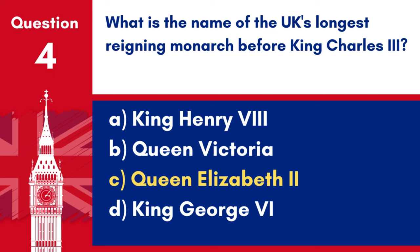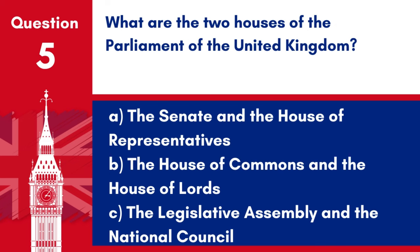Before King Charles III, Queen Elizabeth II was the UK's longest reigning monarch. Question 5. What are the two Houses of the Parliament of the United Kingdom? A. The Senate and the House of Representatives. B. The House of Commons and the House of Lords. C. The Legislative Assembly and the National Council. D. The Upper House and the Lower House. Answer: B. The House of Commons and the House of Lords. The two Houses of the UK Parliament are the House of Commons and the House of Lords.